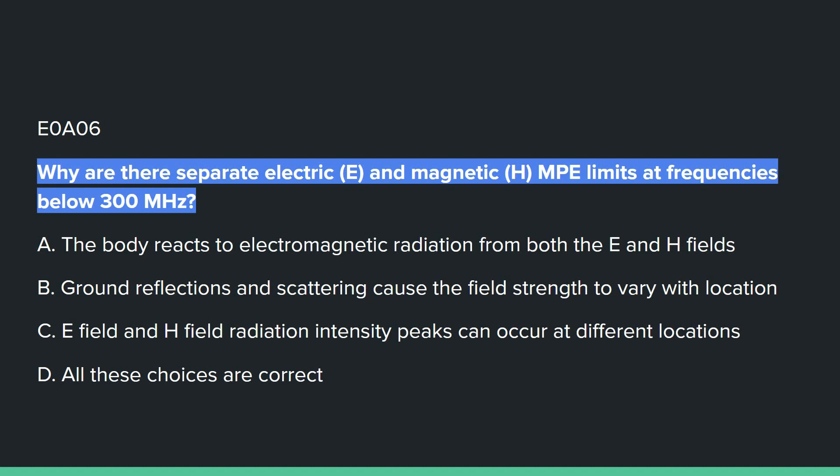E0A06: Why are there separate electric and magnetic MPE limits at frequencies above 300 MHz or below 300 MHz? That's D — all of these choices are correct. So: A, the body reacts to electromagnetic radiation in both the E and H fields; B, ground reflections and scattering cause the field strength to vary with location; and C, E field and H field radiation intensity peaks can occur at different locations.